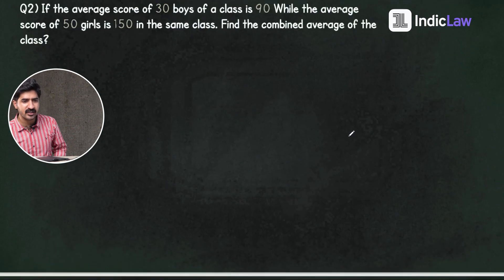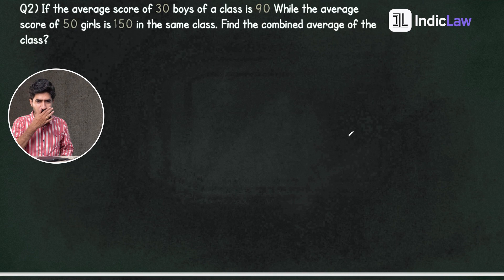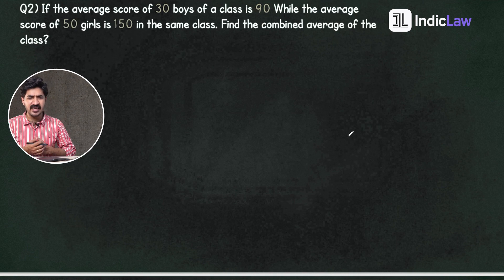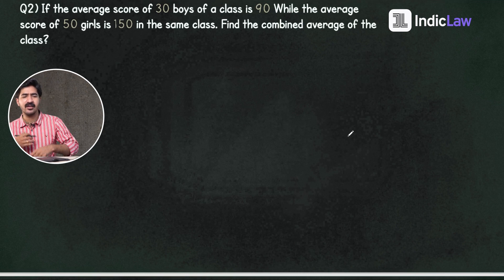If the average score of 30 boys of a class is 90, while the average score of 50 girls is 150 in the same class, find the combined average of the class.